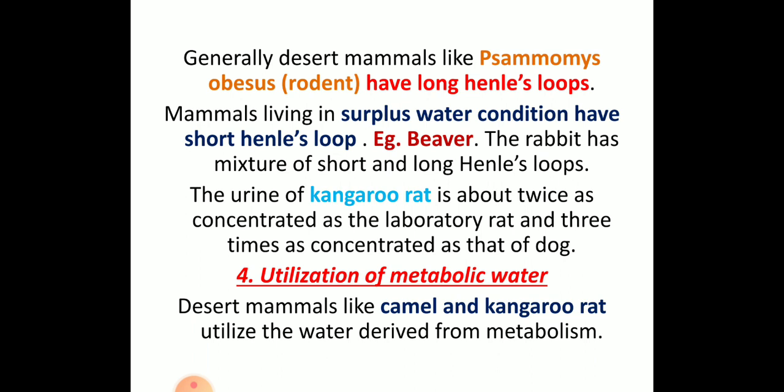Next, utilization of metabolic water. Desert animals like the camel and kangaroo rat utilize water derived from metabolism. For example, when food material — usually a high-protein-rich diet — is broken down, the process takes longer, allowing them to overcome starvation. That is why they can utilize metabolic water for different purposes.